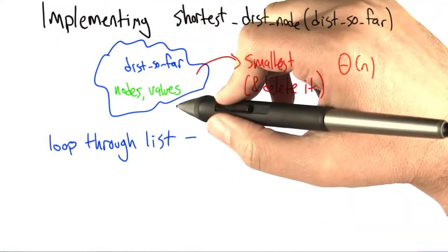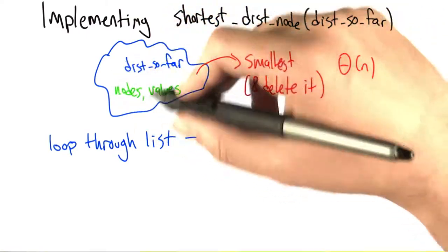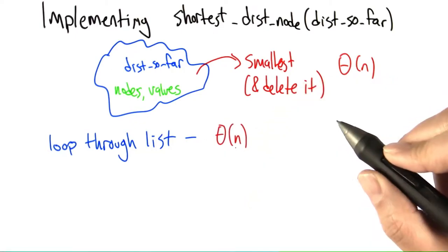So to get the smallest distance in here, a natural thing to do is to loop through the list. So take all the distances that we actually have at the moment, just loop through them and pull out the minimum. Easy. Big theta of n.